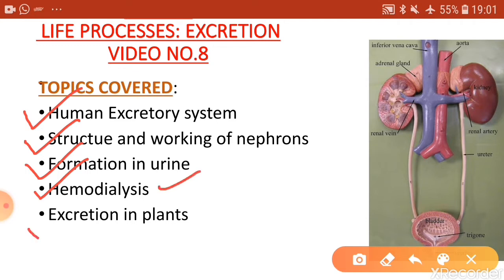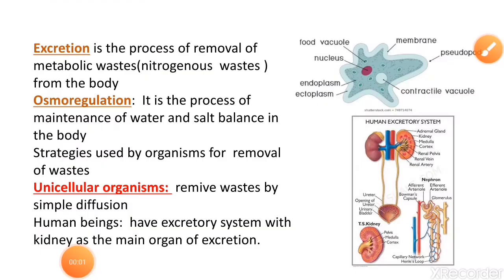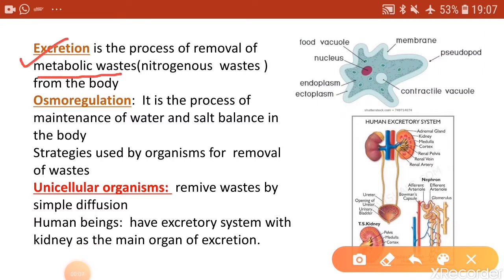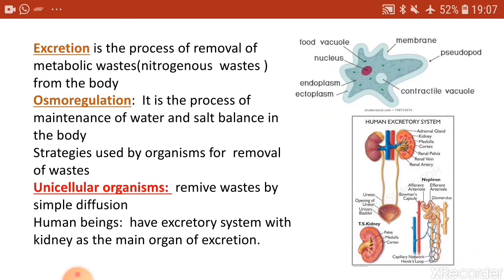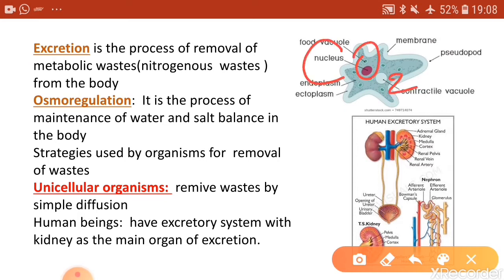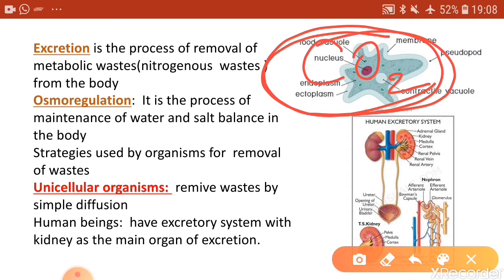Excretion is the process of removal of metabolic waste from the body. Metabolism is the sum total of all the biochemical reactions going on in our body or in our cells. As a result of those reactions, lots of waste materials are produced. For example, in the process of respiration the metabolic waste released is carbon dioxide, which is removed out of the body by the process of exhalation.